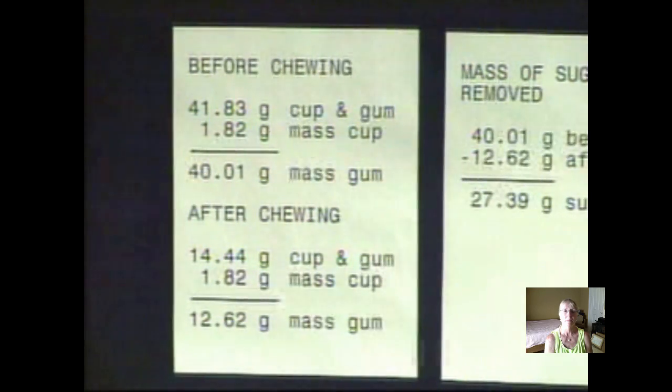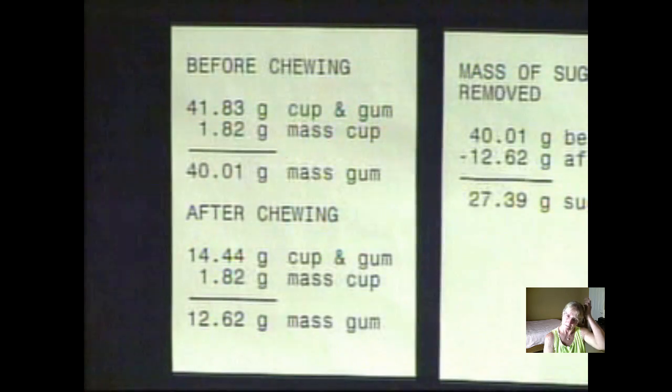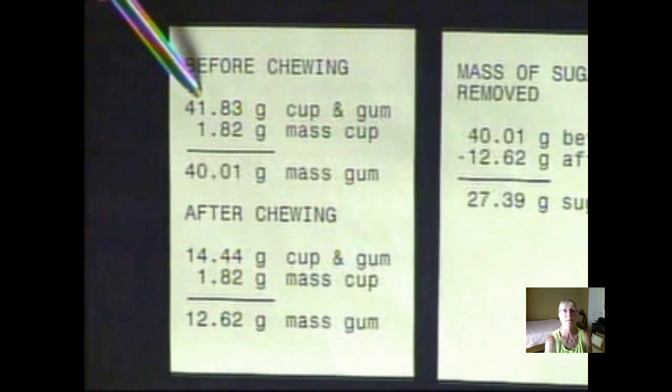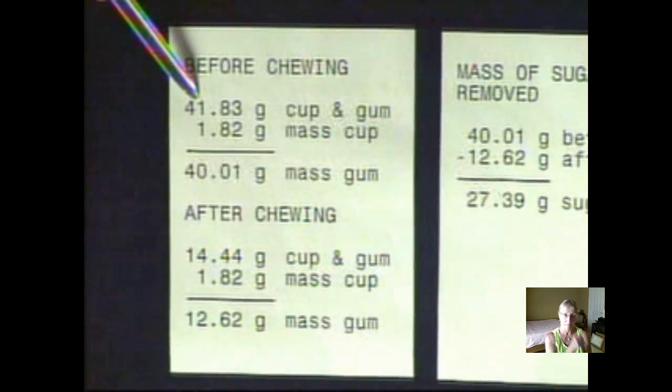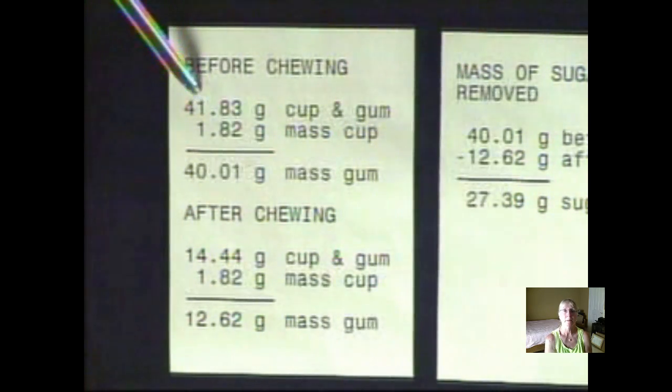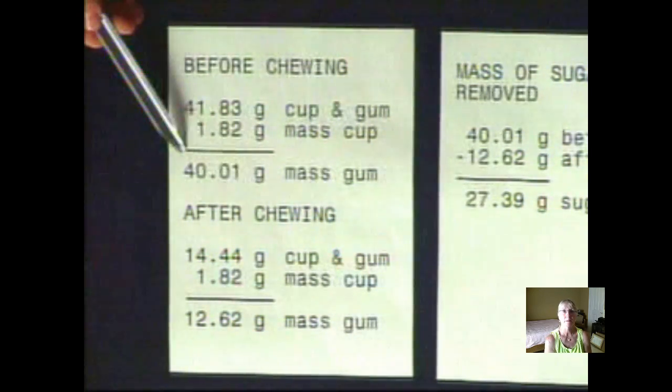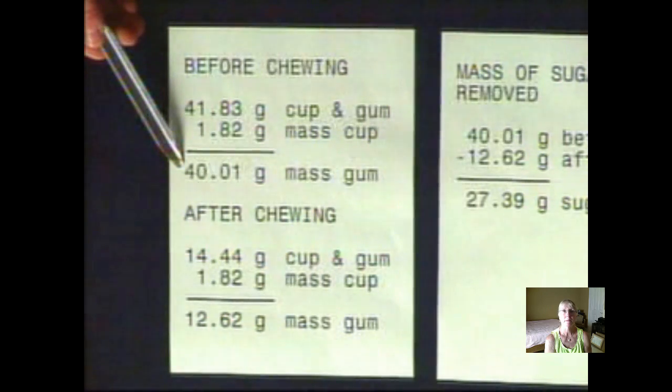To go through the calculations, we find that we began with 41.83 grams of chewing gum in the cup. Subtracting the mass of the cup, we began with 40 grams of dry gum.